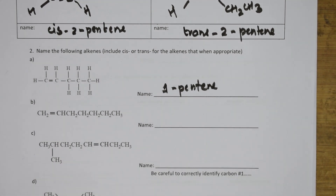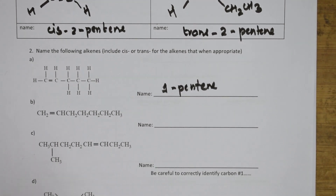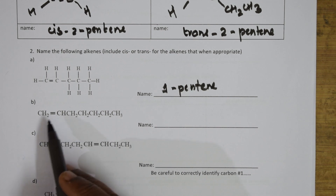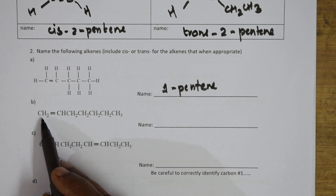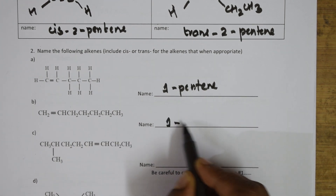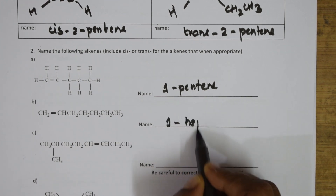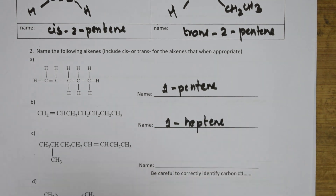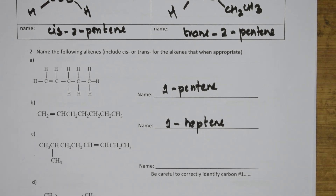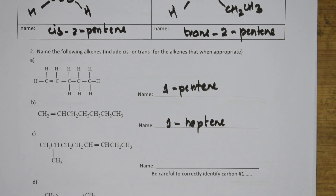What is this compound in the B part? Again, there is a double bond, so I should see that the double bond gets the minimum number. I should start from here: one, two, three, four, five, six, seven — seven means hept. The double bond is at the first position, so it is 1-heptene.